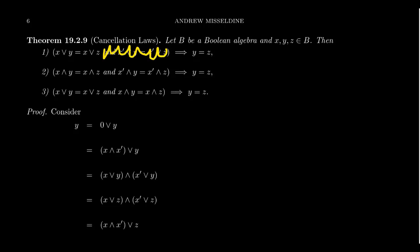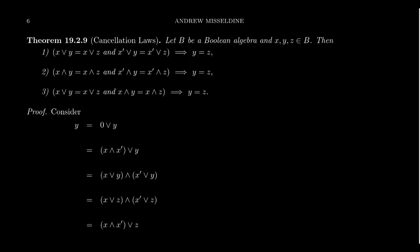In groups, cancellation was simply: if x times y equals x times z, you cancel x to get y equals z, using inverses. Here we don't have inverses, we have complements. So we require that if two products are the same with respect to x and with respect to x-complement, then the factors had to be the same. You do need both statements in order for these things to be true.